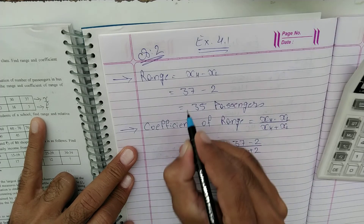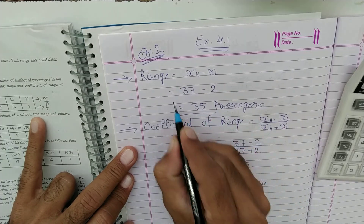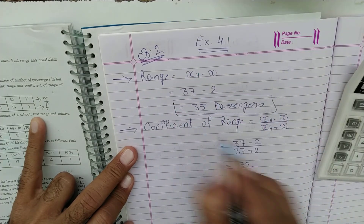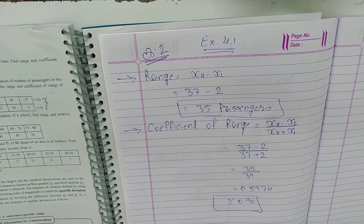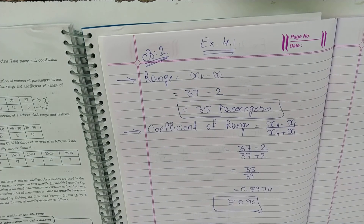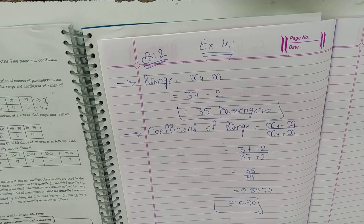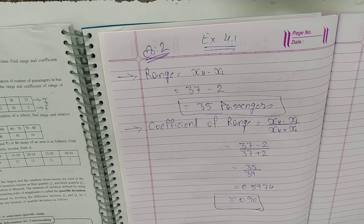यह हो गया हमारा coefficient of range और यह है हमारा range. तो देखिए, एक बार अगर आपका formula clear है, concept clear है, तो आप easily sum कर पाओगे.